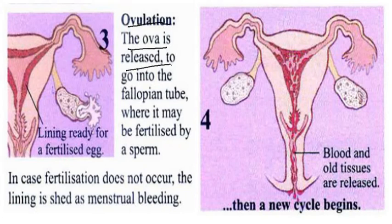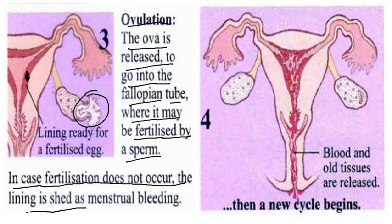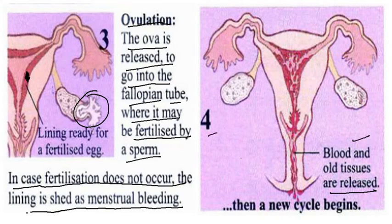Ovum is released to go into the fallopian tube, where it may be fertilized by a sperm. The lining is ready for the fertilization. In case fertilization does not occur, the lining sheds as menstrual bleeding — blood and old tissues are released. Then a new cycle begins.